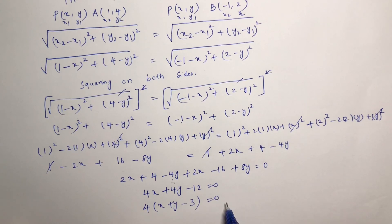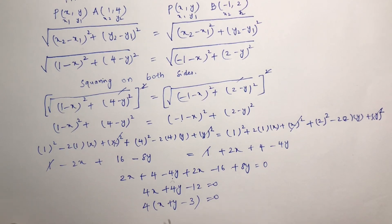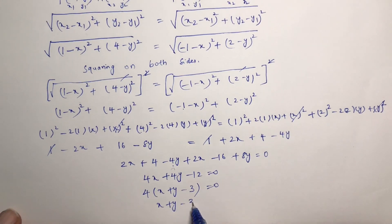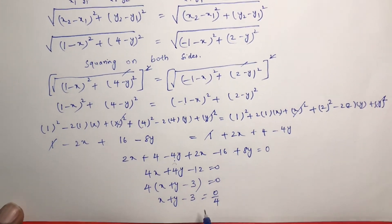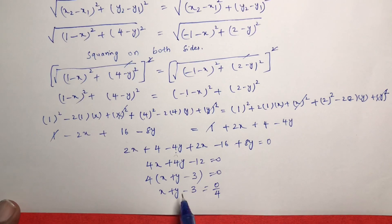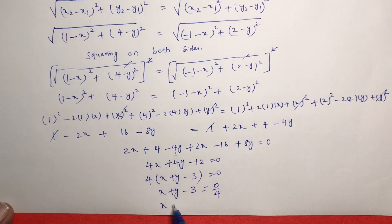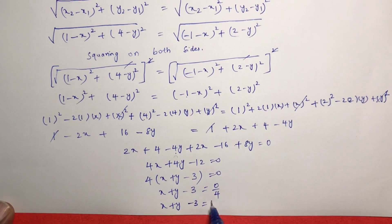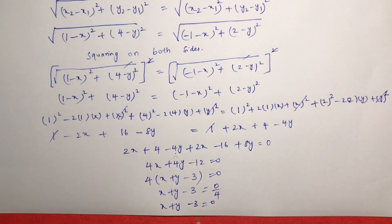Transposing, the result is X plus Y minus 3 equals 0 divided by 4, giving X plus Y minus 3 equals 0. So the answer is X plus Y minus 3 equals 0. This is the relationship between X and Y.